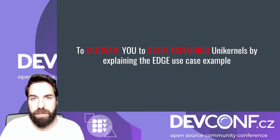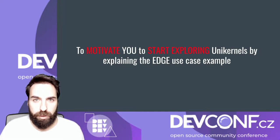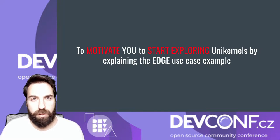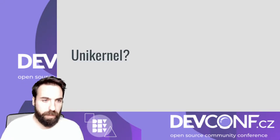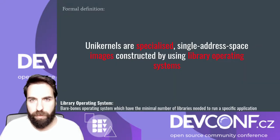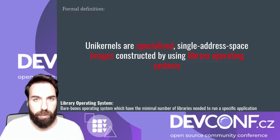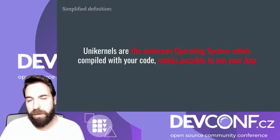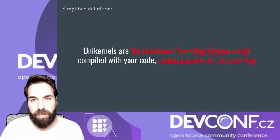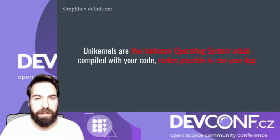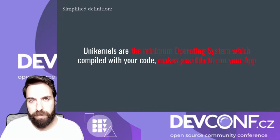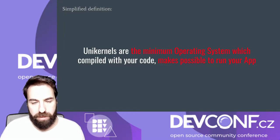When I refer to the Edge, I mean the distributed architecture where you have the compute and storage close to the location where it will be consumed. What is a Unikernel? Skipping the formal definition, the simplified one is that a Unikernel is the minimum operating system that, combined along with your code, makes it possible to run your application.